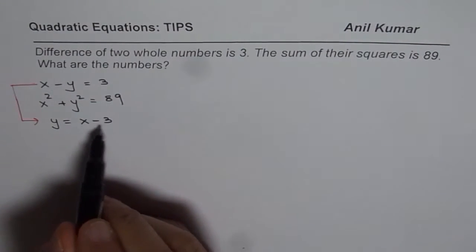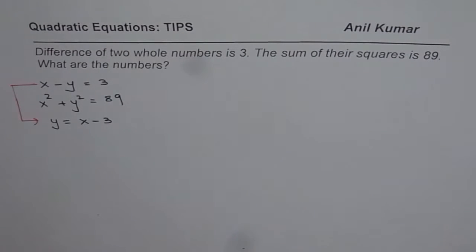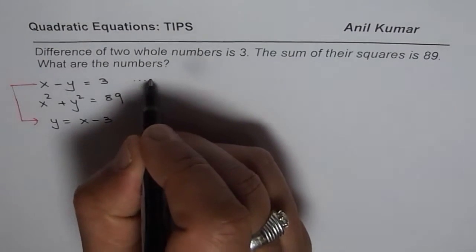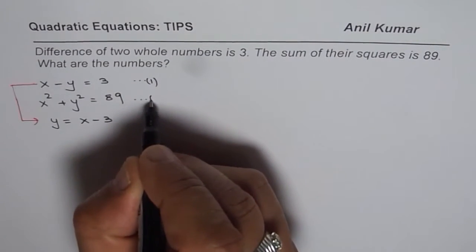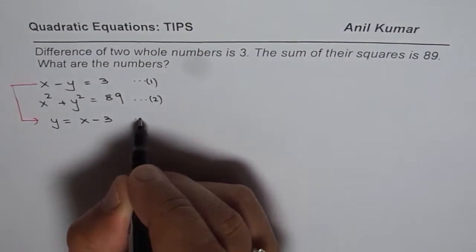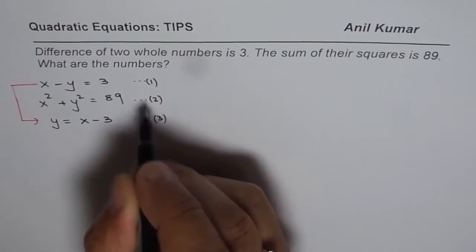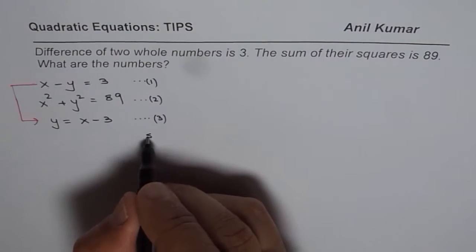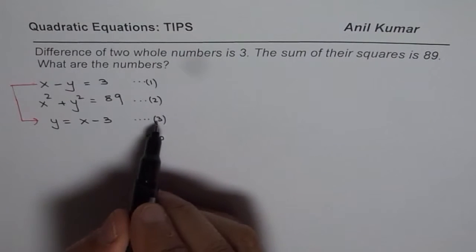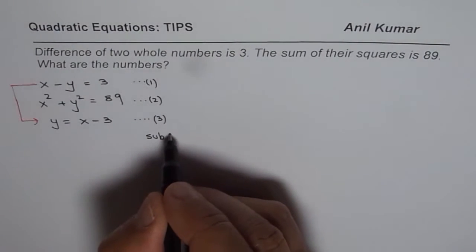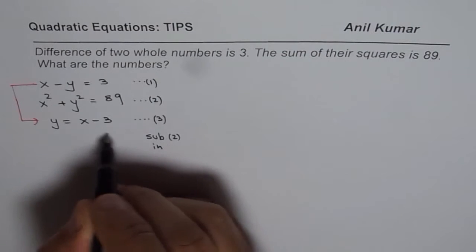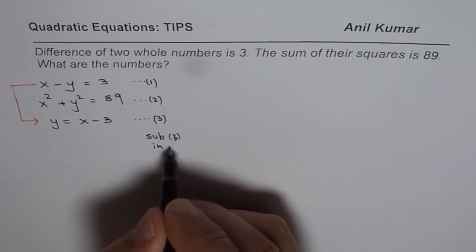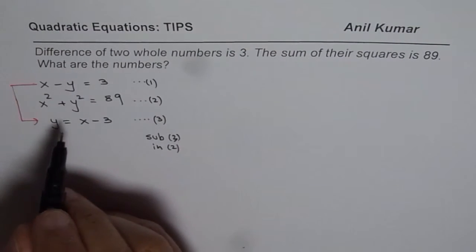Now we can substitute this in the given equation. If we number these equations as 1, 2 and 3, let us say this is equation 1, this is given equation 2. We found this from equation 1. Now if I sub equation 3 in 2, then what do we get?